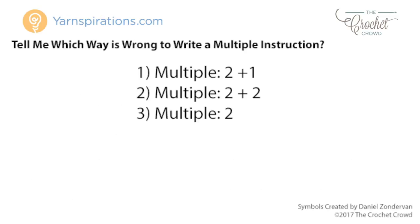There are proper ways to read a multiple stitch count, so let's review that. Most stitch counts will have a number plus a number, but this is not always the case. Let's take a look at three examples so you can understand the difference. Which multiple stitch count is written incorrectly? Number 1: multiple 2 plus 1. Number 2: multiple 2 plus 2. Number 3: multiple 2.